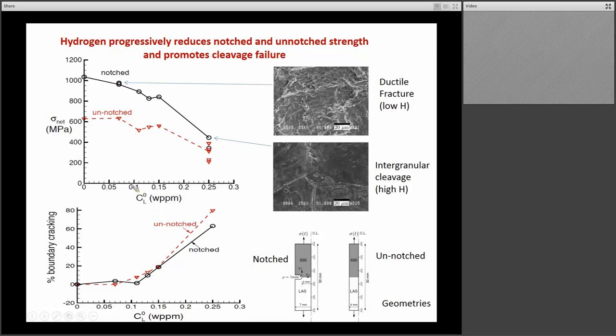When you measure the net section strength as a function of hydrogen content in the lattice — the notation L is for the lattice as opposed to the traps — plotting the measured strength against hydrogen content, you see two things: the mechanism of failure switches from ductile in the un-notched material to a cleavage mode as hydrogen increases, and you get the same in a notch configuration. You get a progressive drop in strength and a switch in mechanism from ductile to cleavage with an attendant drop in toughness.